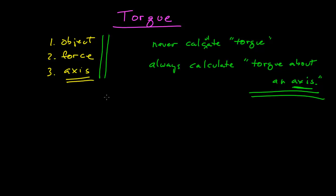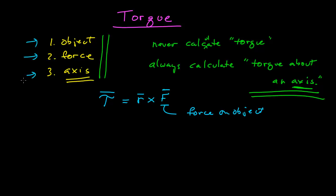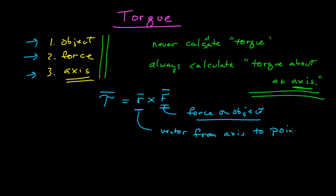Once you've done that, then calculating a torque — which we identify by the Greek letter tau — torque is a vector. That torque is given by the cross product of two vectors. The F vector is easy enough; this is the force on the object. This vector R is the vector pointing from the axis to the point where the force acts.